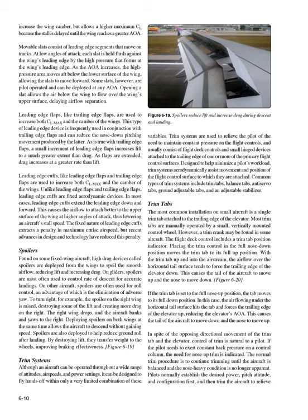Spoilers are high-drag devices deployed from the wings to spoil smooth airflow, reducing lift and increasing drag. On gliders, they are most often used to control rate of descent for accurate landings. On other aircraft, spoilers are often used for roll control—an advantage being the elimination of adverse yaw. To turn right, the spoiler on the right wing is raised, destroying lift and creating more drag on the right, causing the wing to drop and the aircraft to bank and yaw right. Deploying spoilers on both wings simultaneously allows descent without gaining speed. Spoilers are also deployed after landing to reduce ground roll by destroying lift, transferring weight to the wheels and improving braking effectiveness.